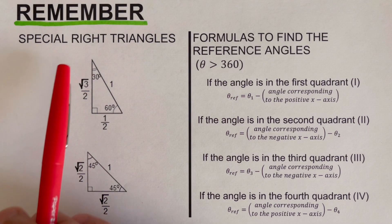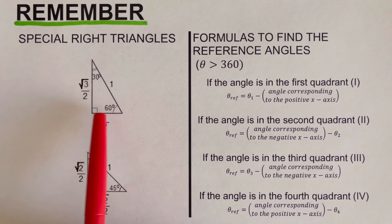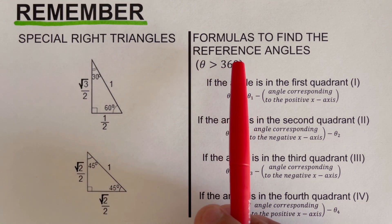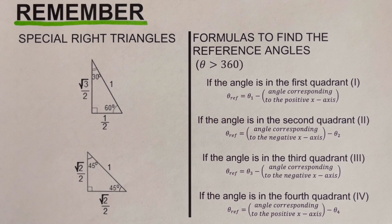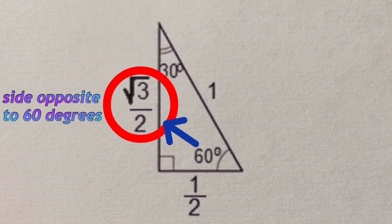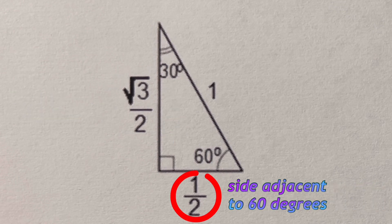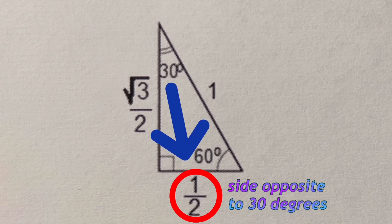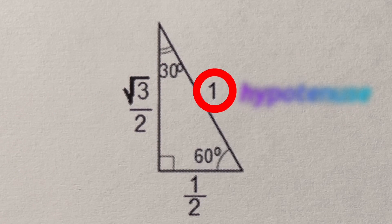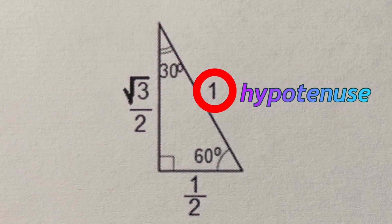We remember that the special right triangles include the 30-60-90 degree triangle and the 45-45-90 degree triangle, and the formulas to find the reference angle are very important in order to evaluate trigonometric functions. Let's go over the 30-60-90 degree triangle. The side opposite to 60 degrees is √3/2, the side adjacent to 60 degrees is 1/2, the side opposite to 30 degrees is 1/2, and the side adjacent to 30 degrees is √3/2. The hypotenuse for the 30-60-90 degree triangle is 1.